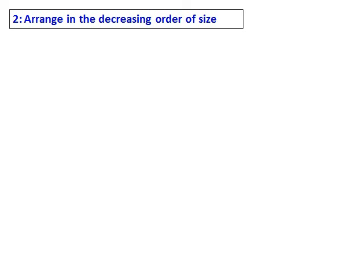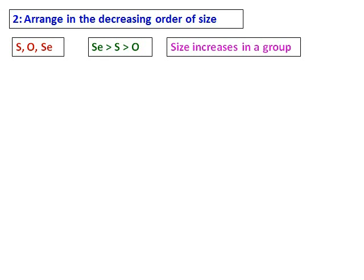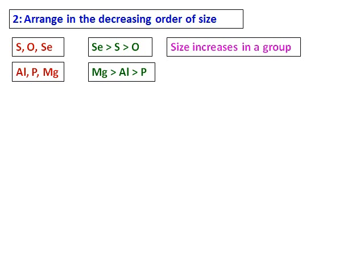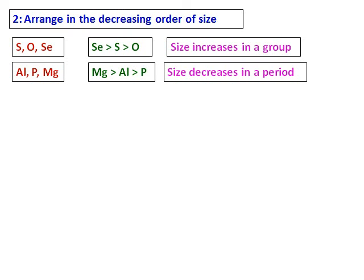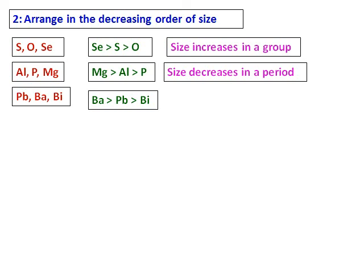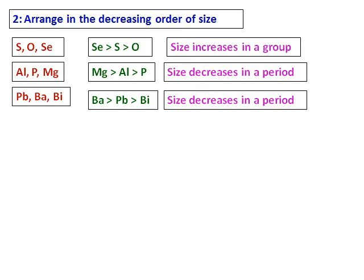Arrange the following in decreasing order of size. Sulfur, oxygen, selenium: they belong to the same group, so the order is Se > S > O, since size increases in a group. Aluminum, phosphorus, magnesium: they belong to the same period, so the order is Mg > Al > P, since size decreases in a period. Lead, barium, bismuth: the order is Ba > Pb > Bi, since they belong to the same period and size decreases in a period.